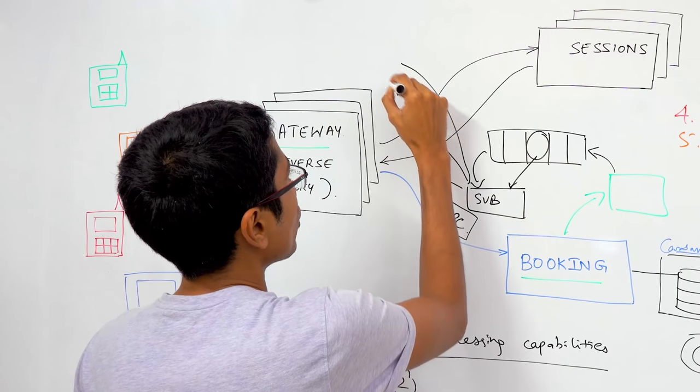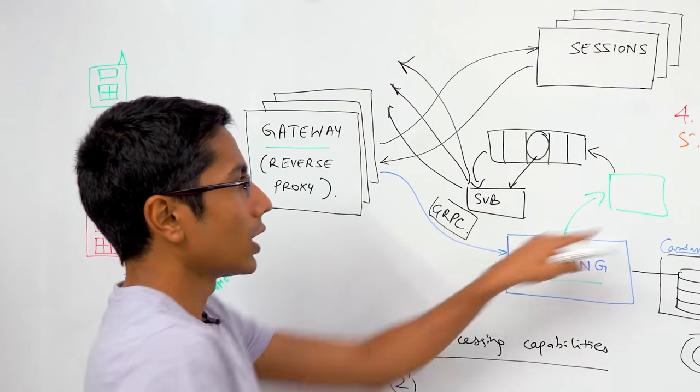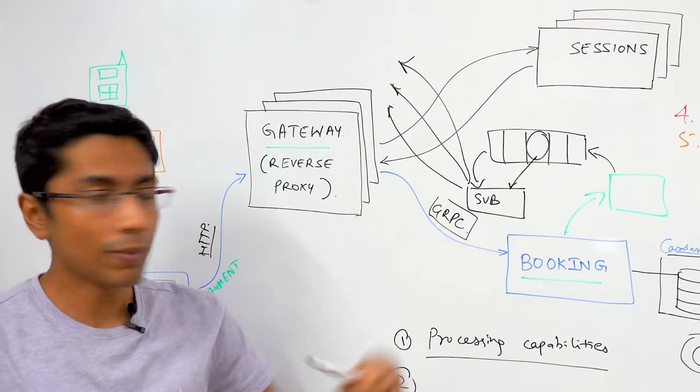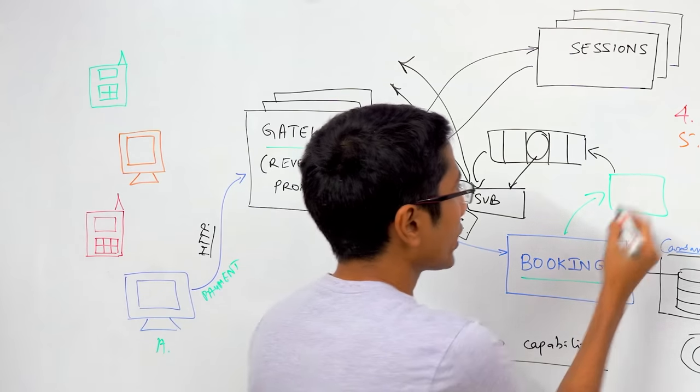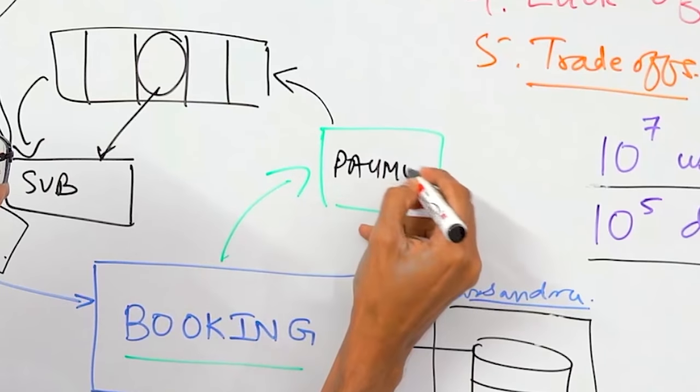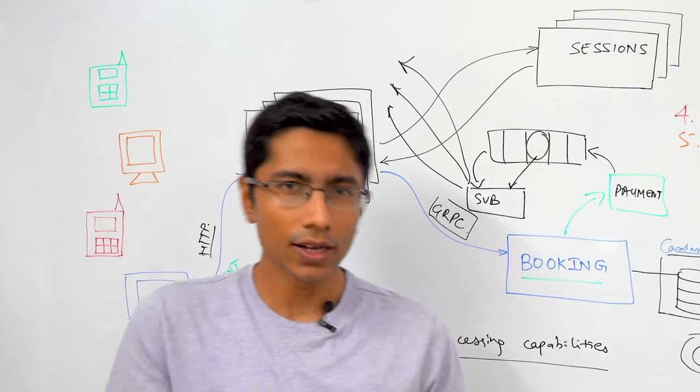There's a benefit to this because you have now decoupled this system with the email firing. So this is the booking system and this is the payment system. The payment system has no idea when the email is being fired. It doesn't need to know either.